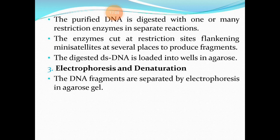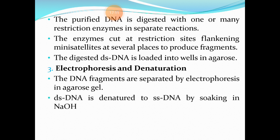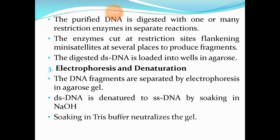The third step is electrophoresis and denaturation. DNA fragments are separated by electrophoresis in agarose gel. Then the double-stranded DNA has to be denatured to single-stranded DNA by soaking in NaOH — sodium hydroxide. Please note: for Southern blot or Southern hybridization, you need single-stranded DNA, not double-stranded.